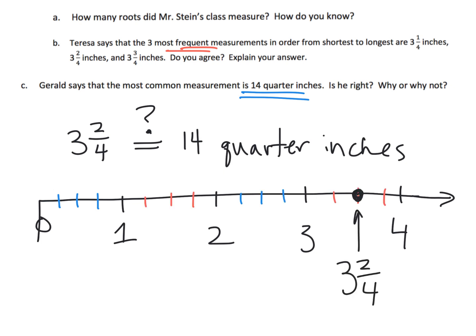Now where is three and two quarters? Well, three and two quarters would live right here. That's three and two quarters. So now we have to see if that's equal to 14 quarters. So we're just going to count: one, two, three, four quarters equals one whole, five, six, seven, eight, nine, ten, eleven, twelve, thirteen, fourteen. So the answer is yes, he is indeed correct.